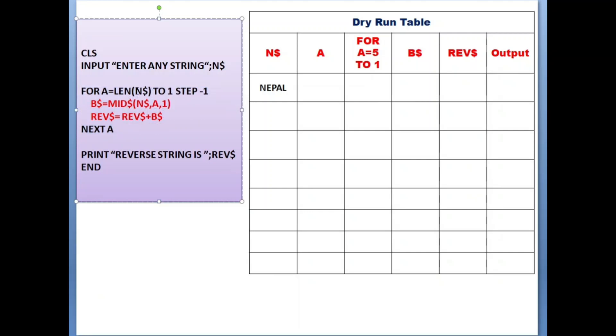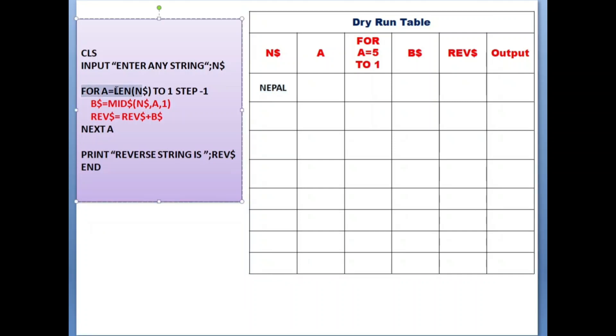The next variable we have used is B$, so I'm writing B$ here. Then we have REV$, so I'm writing REV$. At the last I have written output, because we have used a print statement - whenever you write anything in the print statement it will be displayed on the output screen. Now let's start the process. This is the main important logic and these are the four lines of code you need to understand. The remaining part is easy. I start from 'Nepal' as the string I am using for the trace.